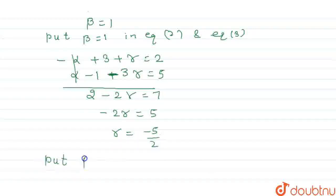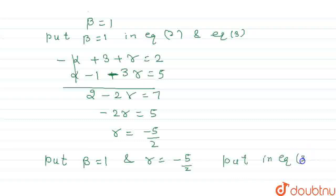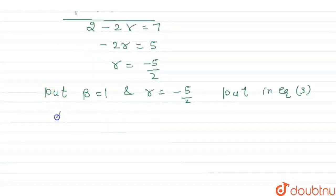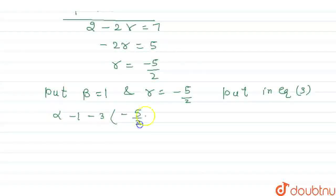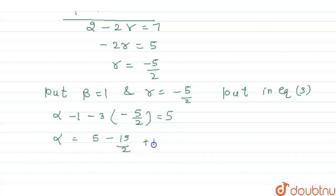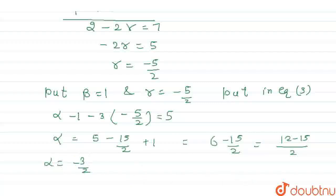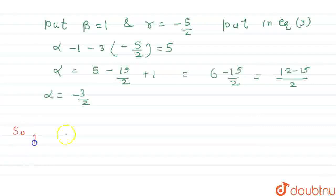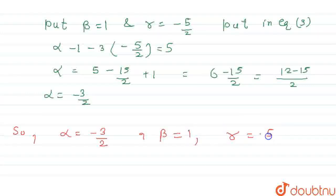Now we put beta = 1 and gamma = minus 5/2 into equation 3: alpha minus 1 minus 3 multiplied by minus 5/2 = 5. So alpha = 5 minus 15/2 plus 1, which simplifies to 6 minus 15/2, giving 12/2 minus 15/2 = minus 3/2. So alpha = minus 3/2, beta = 1, and gamma = minus 5/2.